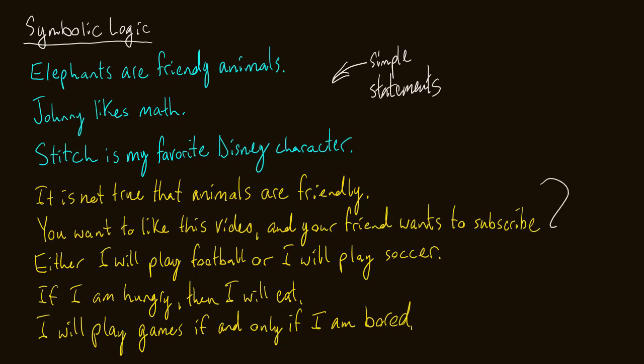Below them in yellow, these are all compound statements. So we kind of join two simple statements together, or maybe there's just a little bit more to be said about a simple statement. It is not true that animals are friendly. So that's an example of a negation of a simple statement. Animals are friendly is the simple statement. It is not true that negates the simple statement. You want to like this video and your friend wants to subscribe. So there's some subliminal messaging. As you can see, that's a conjunction of two simple statements.